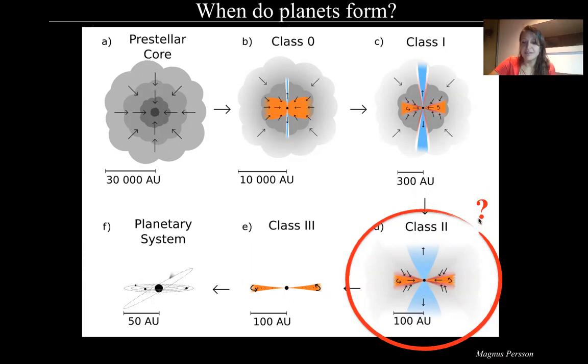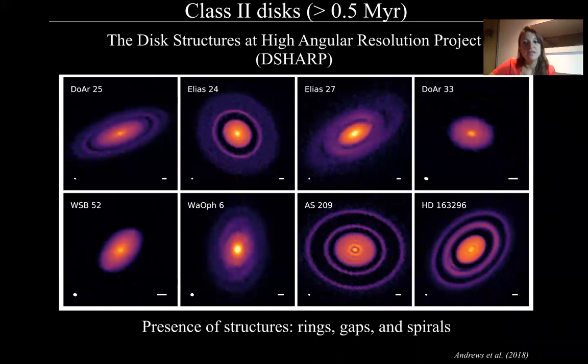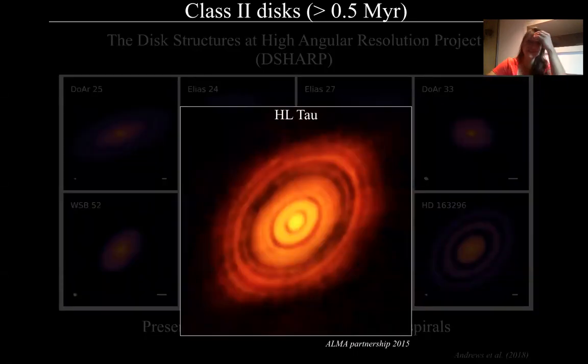Now this is a big question mark because with recent observations we have seen structures like rings, gaps, and spirals. This is the D-Sharp project of Class 2 or T-Tauri disks older than 0.5 million years. These observations came after, of course, the very famous HL Tau, and this is the source that we have to thank in this conference. After this HL Tau it was a revolution and more sources began to be observed in the dust continuum emission, and we started to see all these structures.